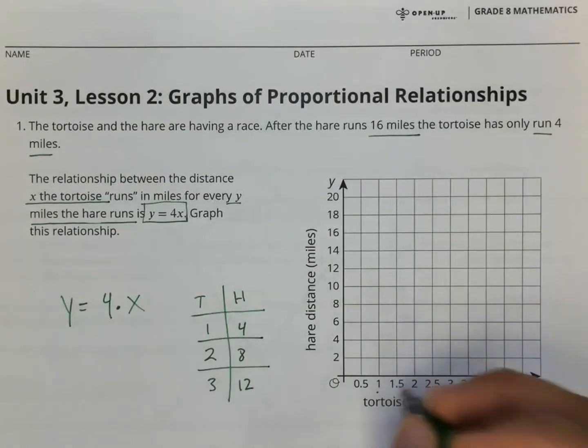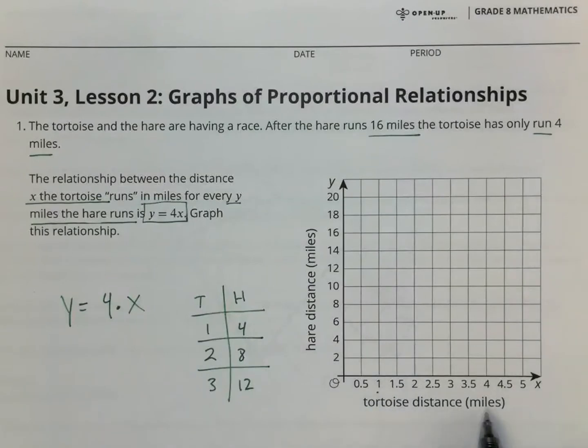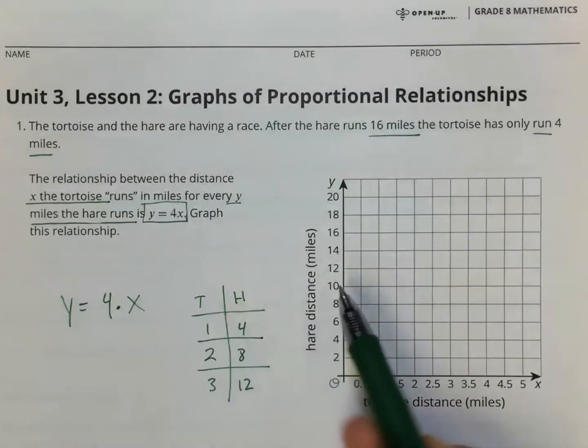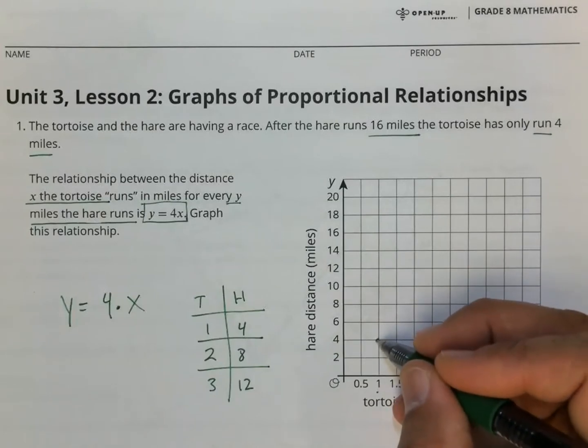So here I have one for the tortoise. Notice the axis here. Tortoise is the x, hare is the y-axis. So now I'm going to put my first point. One, four.